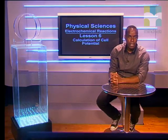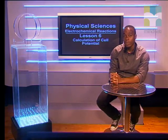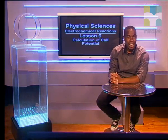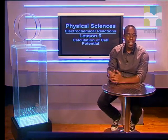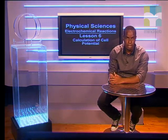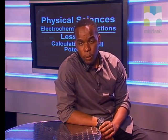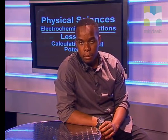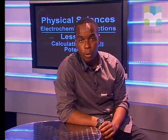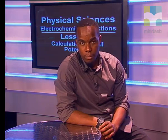Welcome Grade 12s. Today you will need a calculator, pen and paper, and a table of standard electrode potentials so that we can do some calculations of the cell potential of different cells. In a galvanic cell, the redox reaction occurs spontaneously. The cell potential of a cell can be used to predict the spontaneity of the redox reaction.